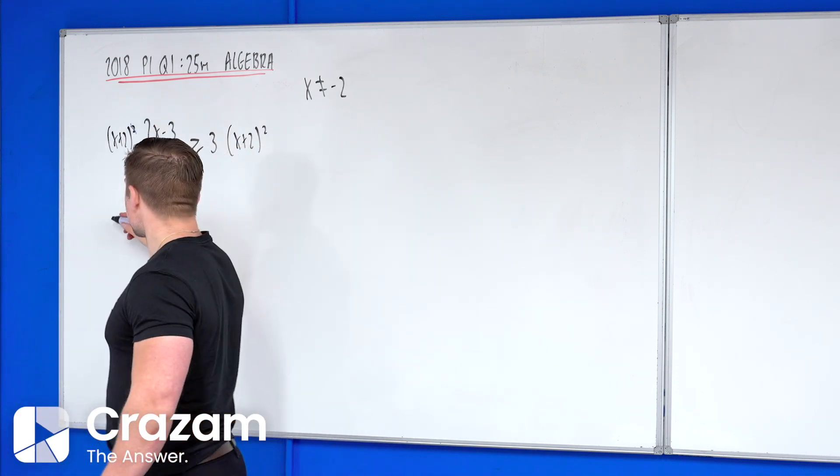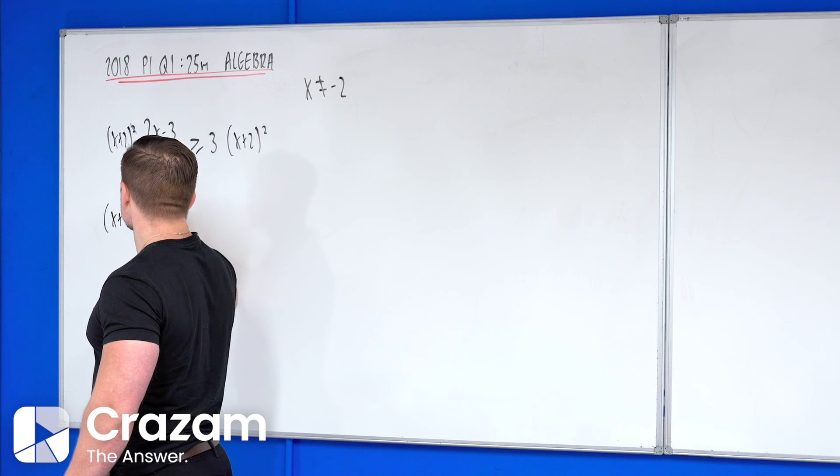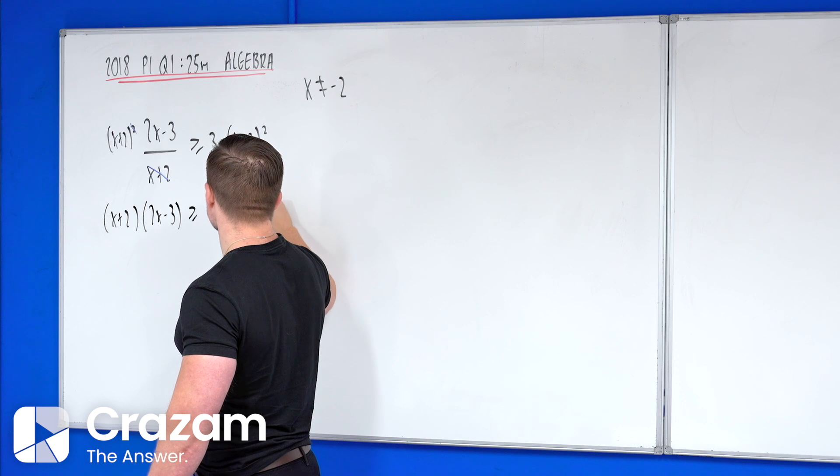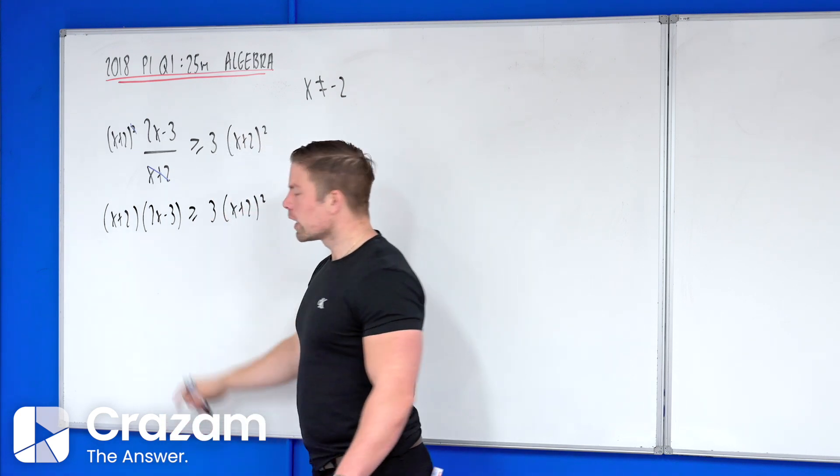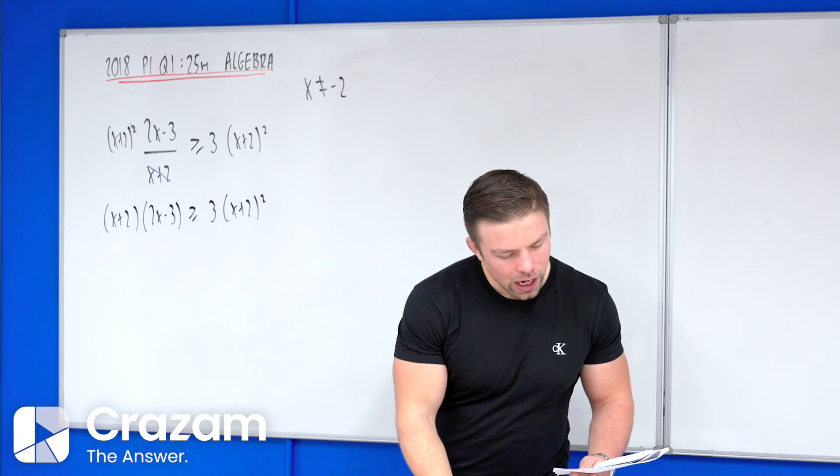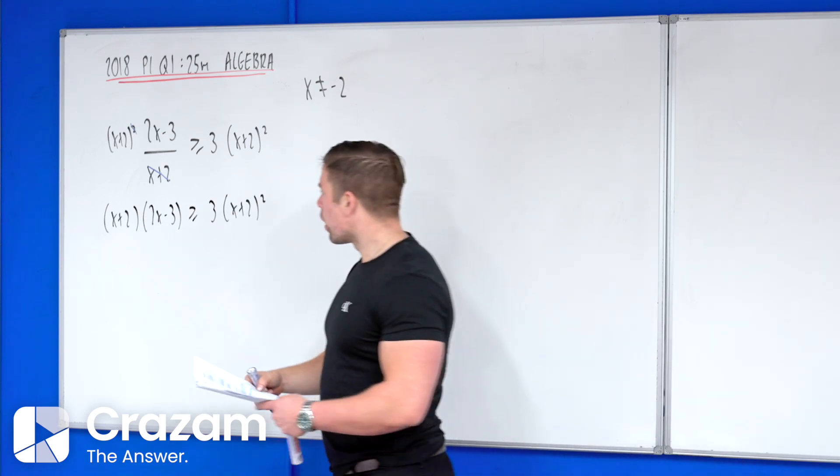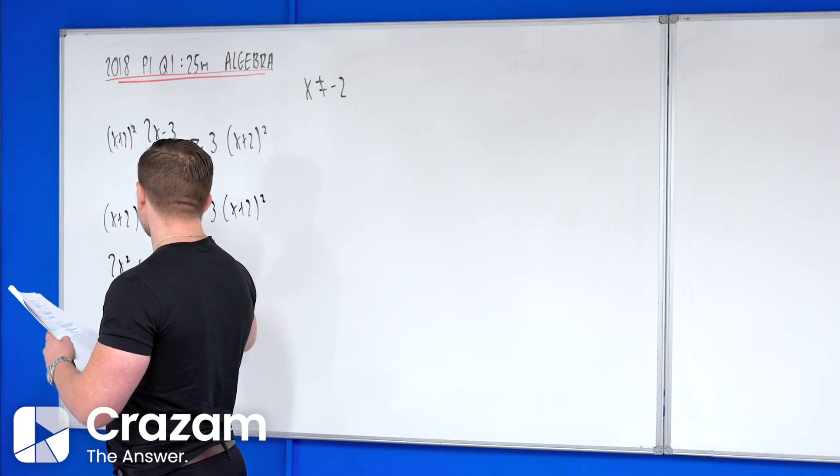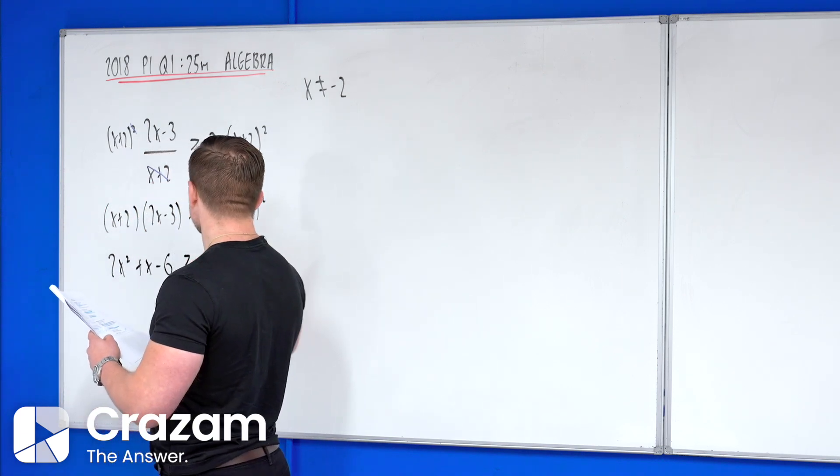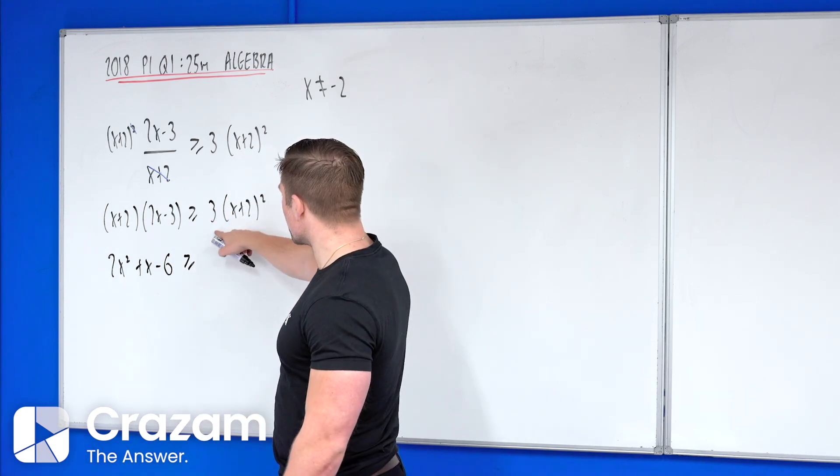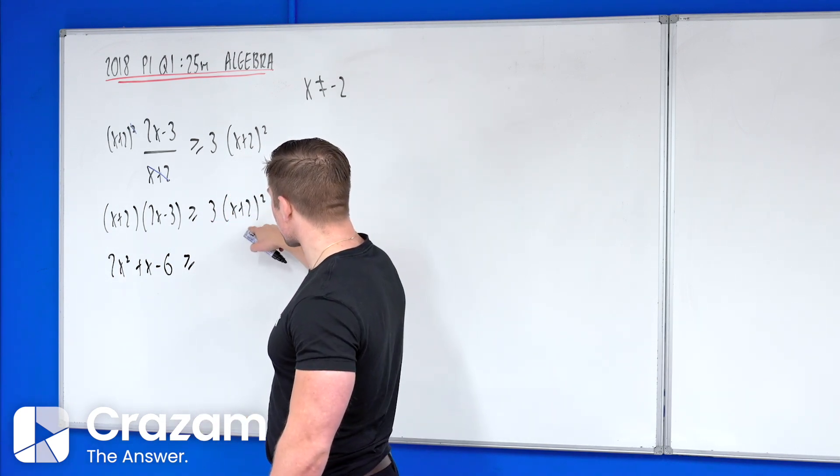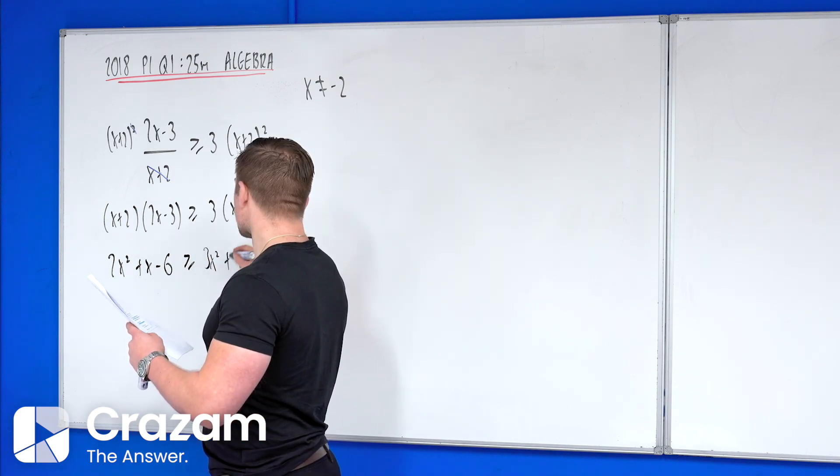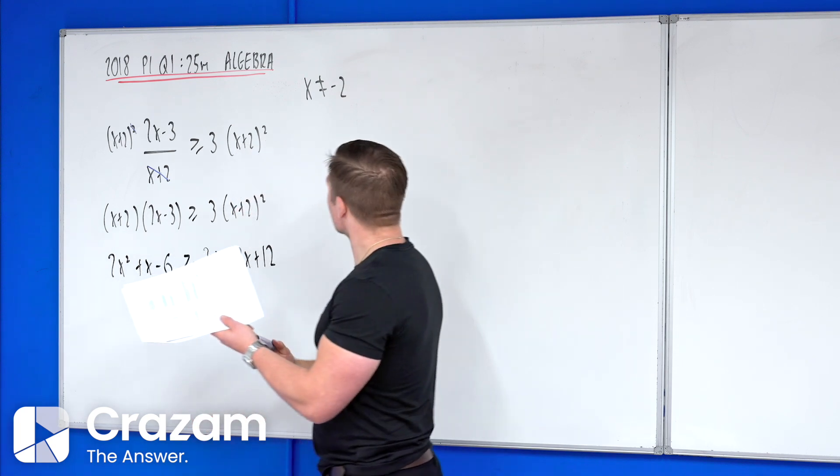So our second line is x plus 2 times 2x minus 3, and that's greater than or equal to 3 times x plus 2 squared. Now we go through our algebra motions here and we multiply stuff out. So on the left hand side we have 2x squared plus x minus 6 when you multiply that out. We square this out first before we multiply. So if we square this out first and then multiply we will have 3x squared plus 12x plus 12.